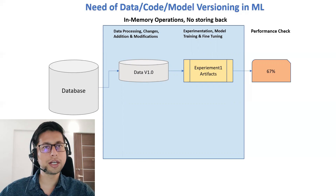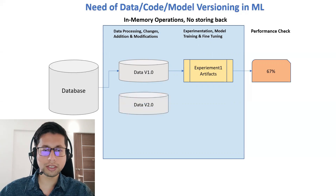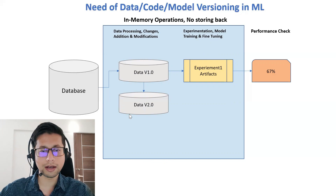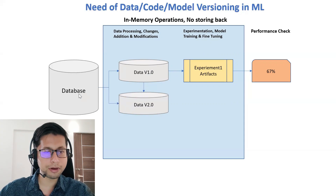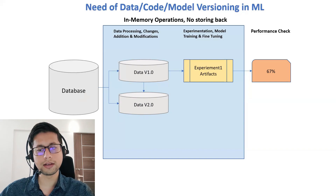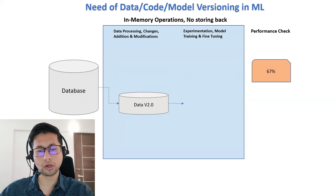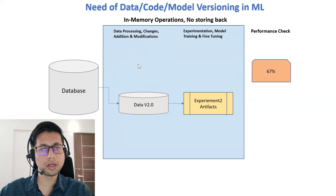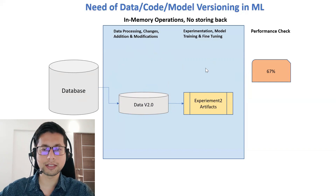By applying transformations to data version 1.0 — and also possibly taking more samples from the database — we get data version 2.0. On this newer version of data we apply certain experimentation and achieve a different model. However, we are doing in-memory operations and not storing anything, so the moment we start this experimentation, our old data and the previous experiment vanish — they are not stored.